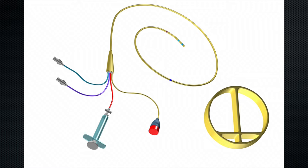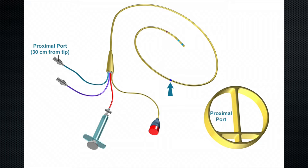The first step in using a pulmonary artery catheter is to recognize its various components. The PA catheter is 110 cm in length, and although catheters come in various permutations, most have four separate lumens which serve individualized functions. Those lumens are demonstrated on the cross-sectional diagram in the lower right corner of this illustration. The proximal port opens approximately 30 cm from the tip of the catheter. This port is intended to rest in the right atrium and can be used to transduce the right atrial pressure and to administer medications or fluids into the right atrium.